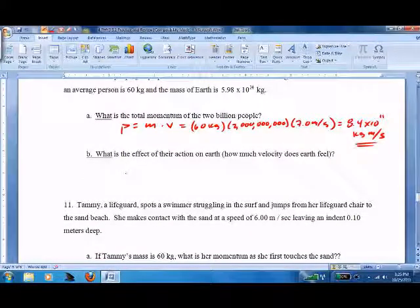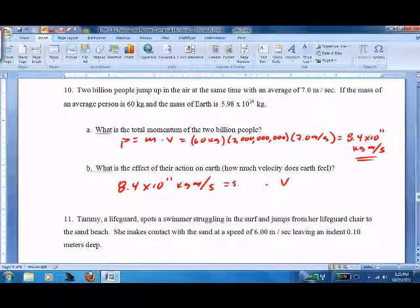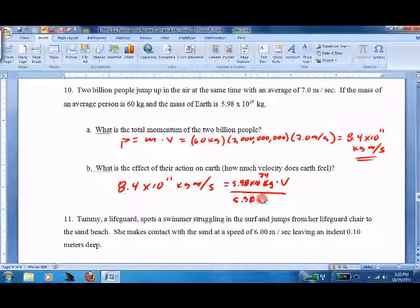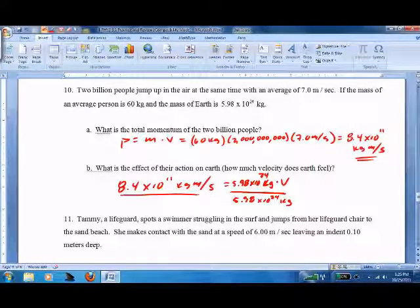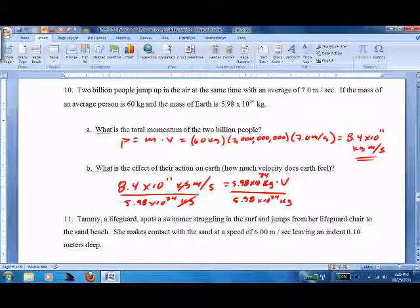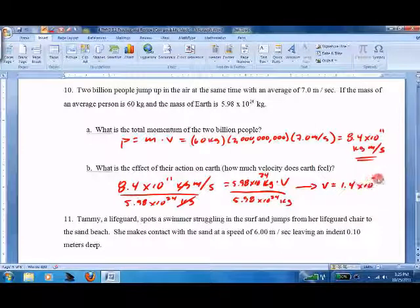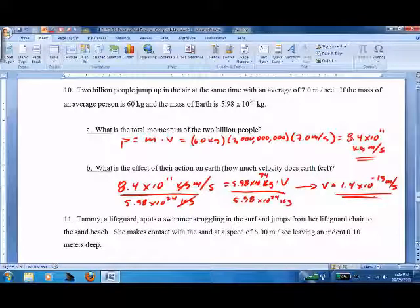What's the effect of their action on the earth? Well, momentum is conserved, so 8.4 times 10 to the 11th kg meters per second equals mass of the earth times the velocity of the earth. The mass of the earth is 5.98 times 10 to the 24th kg. Divide both sides, we get velocity is 1.4 times 10 to the negative 13th meters per second - an insanely small number, not even noticeable to all of us.